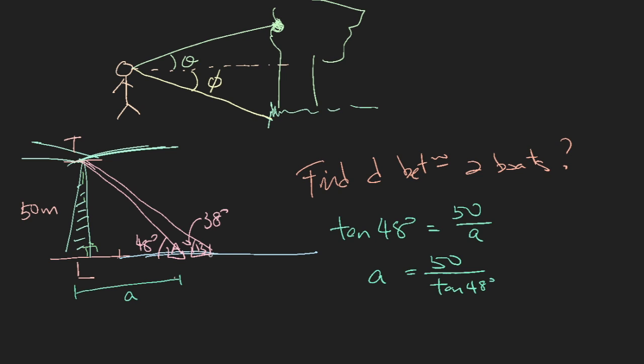We do the same for the second boat, so boat B. The distance between the lighthouse and boat B is b. Tangent of 38 degrees is equals to 50 over b. And if we do the same, b is equals to 50 over tangent 38 degrees. So to find the distance between the two boats, it is just b minus a.